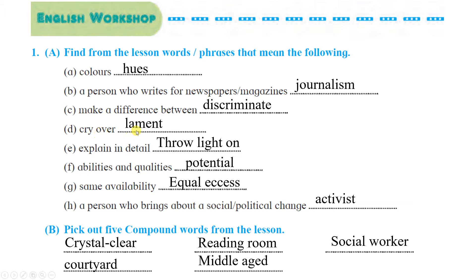'Cry over' means 'lament'. 'Explain in detail' means 'throw light on'. 'Abilities and qualities' means 'potential'. 'Same ability' means 'equal access'. A person who brings about social or political change is known as an 'activist'.